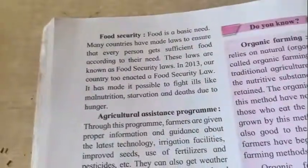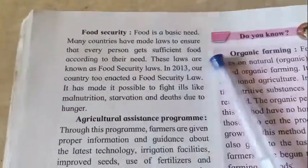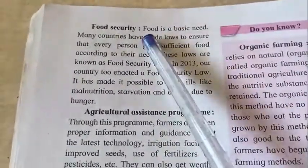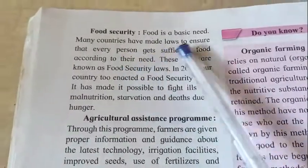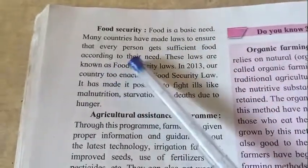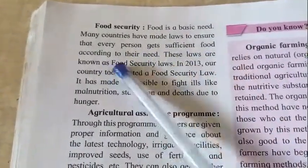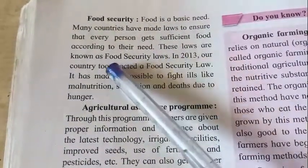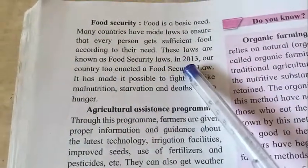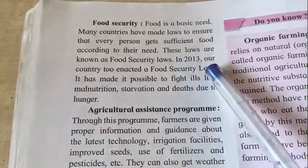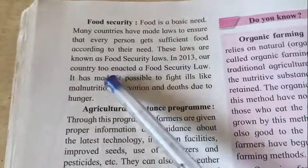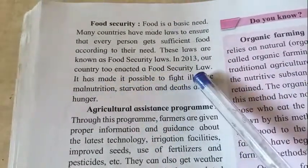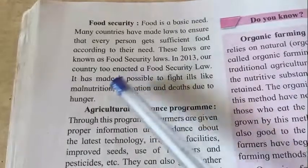The next point is food security. Food is a basic need, as we all know. Many countries have made laws to ensure that every person gets sufficient food according to their need. These laws are known as food security laws.